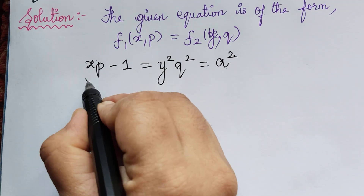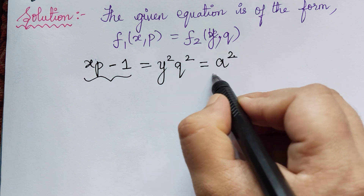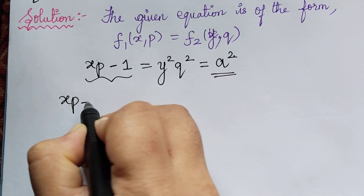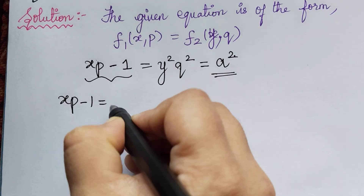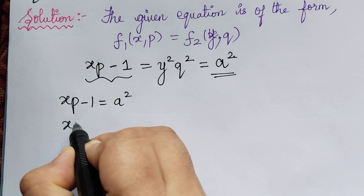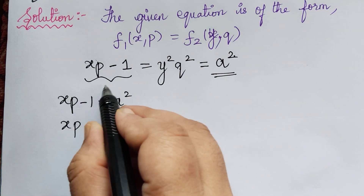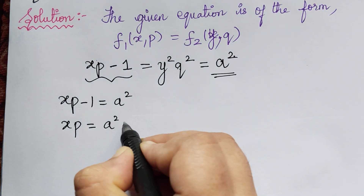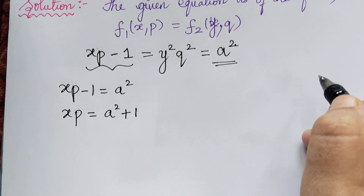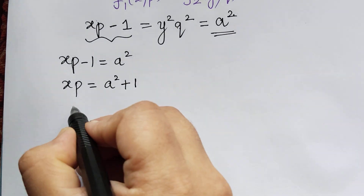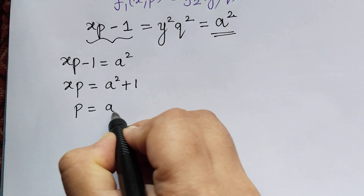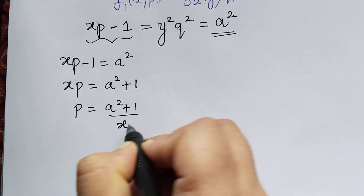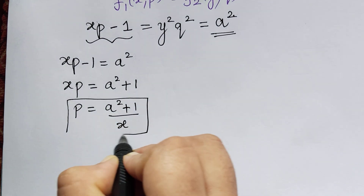So, I am taking it as a squared. From that we get xp minus 1 equal to a squared. So, xp will be equal to a squared plus 1, and therefore the value of p will be equal to a squared plus 1 divided by x. This is the value of p.